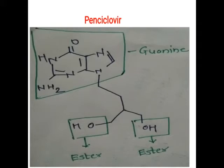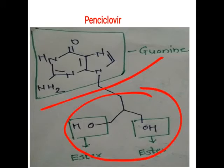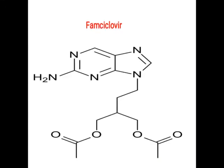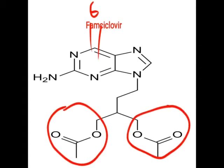The next drug is penciclovir, which has a similar structure to guanosine with a dihydroxy part. The difference from ganciclovir is that in ganciclovir an oxygen is present — an ether linkage — but in penciclovir this oxygen is replaced by carbon, while the two hydroxy groups are still present.